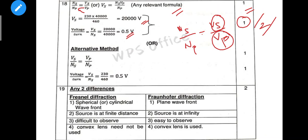The formula is 1 mark. The answer is 1 mark. If you have an alternative method, you will still get the mark. Either you can use this method or the alternative method — both are acceptable.